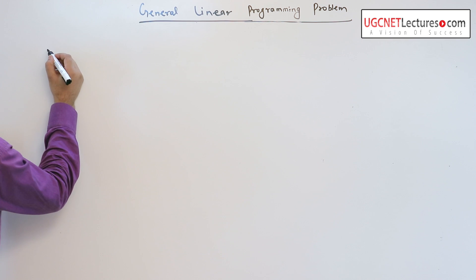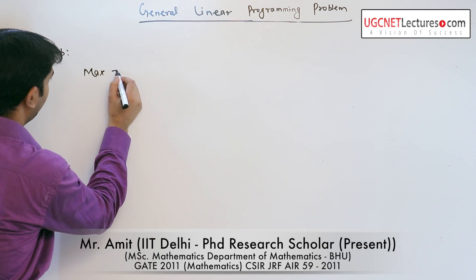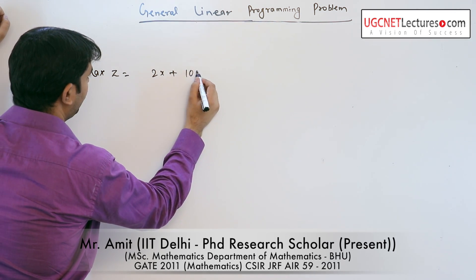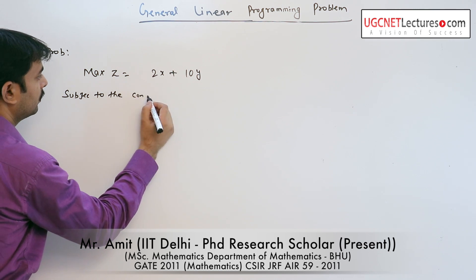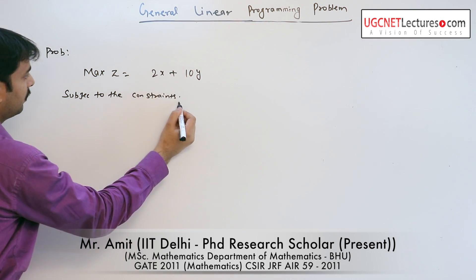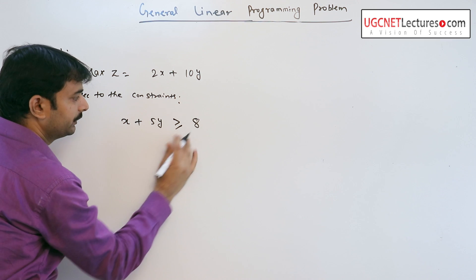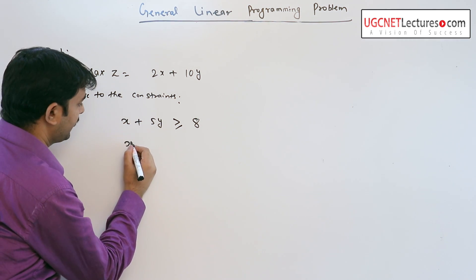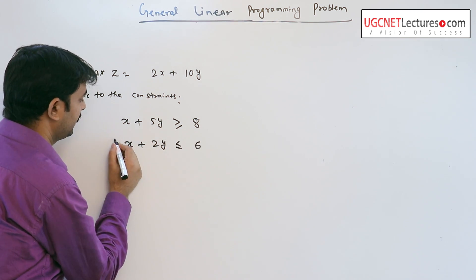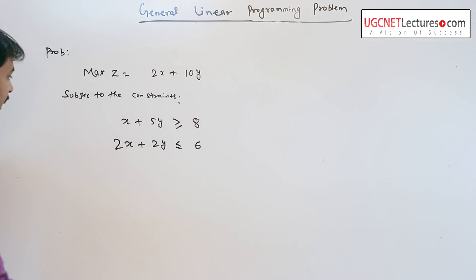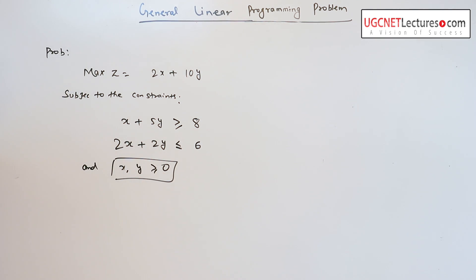For the general linear programming, consider another problem: the maximization of z is equal to 2x plus 10y, subject to the constraints. The first is x plus 5y is greater than or equal to 8, and the second is x plus 2y is less than or equal to 6, and x and y are non-negative.